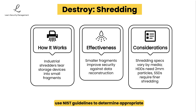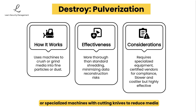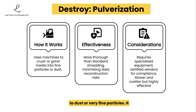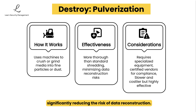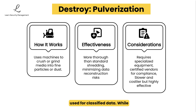Many organizations use NIST guidelines to determine appropriate particle size for different media types. Pulverization uses crushers, grinders, or specialized machines with cutting knives to reduce media to dust or very fine particles. It is considered more thorough than standard shredding, significantly reducing the risk of data reconstruction. Pulverization often requires specialized equipment and may need to be performed by certified third-party vendors to ensure compliance for destroying media used for classified data. While extremely effective, it is generally slower and more expensive than shredding.